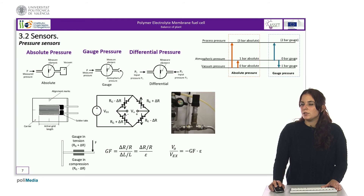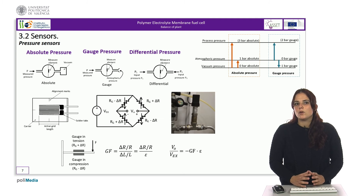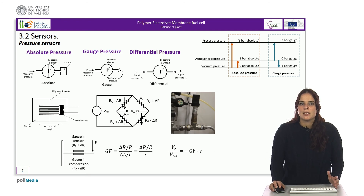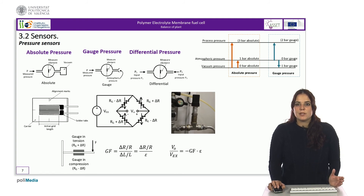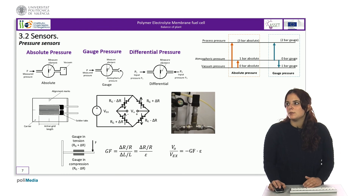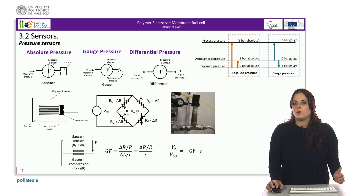With regard to pressure sensors, most of them are based on the effect that the difference in pressure on a diaphragm has on its deformation. This difference in pressure can be caused by the pressure measured in relation to the vacuum — in that case we will be measuring absolute pressure, so the atmospheric pressure will be approximately one bar. If the pressure difference is the measured pressure with respect to the atmospheric pressure, then we are in the case of a GAUGE pressure sensor. In this case, the atmospheric pressure is zero and the vacuum pressure is minus one bar. Finally, using the same operating principle, a differential pressure can be measured, which could be an indirect measurement of flow, for example.